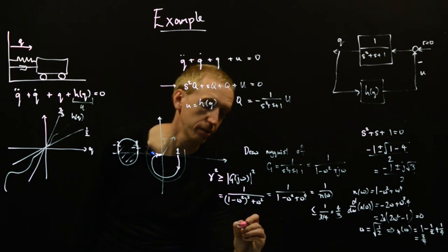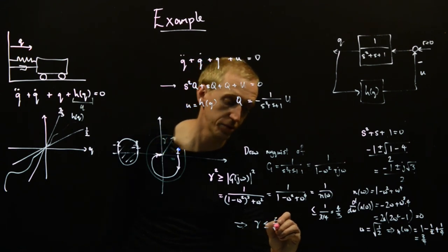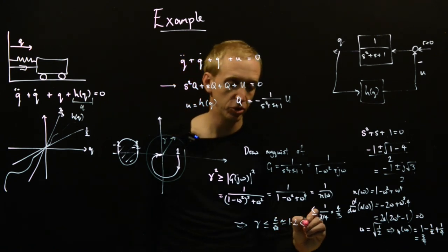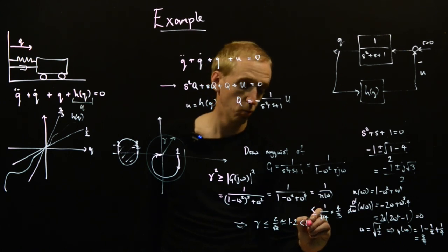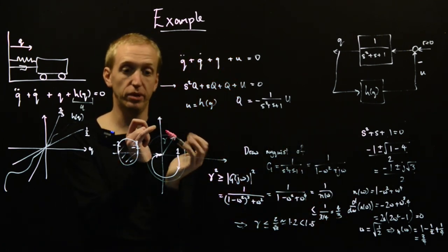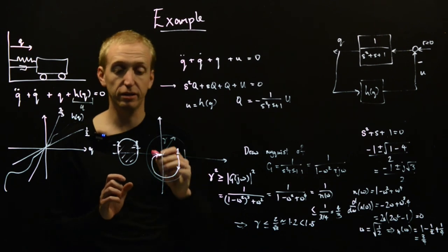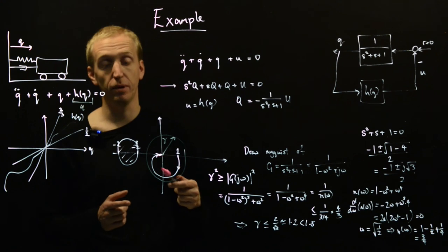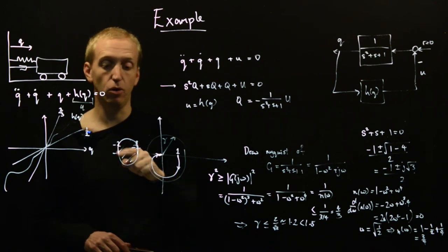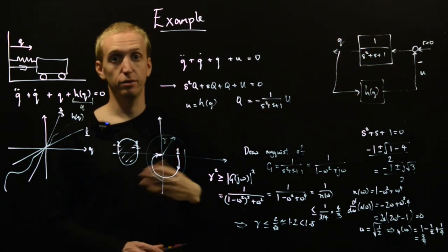Therefore γ ≤ 2/√3 ≈ 1.15, which is less than 1.5. So the Nyquist diagram of G lies within a circle of radius approximately 1.2, which is less than 1.5. The Nyquist diagram can never cut into the forbidden circle, meaning we never encircle the circle for any −1/k point within it. Therefore the Nyquist criterion holds for all such points, and we've proved global asymptotic stability of this feedback loop through the circle criterion.